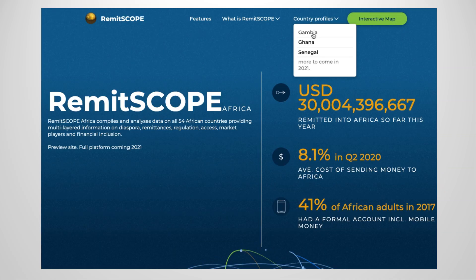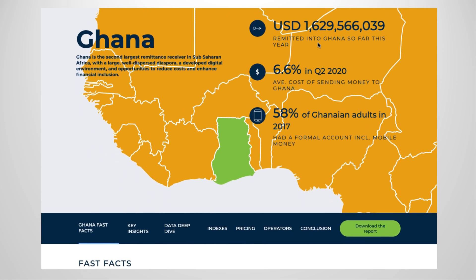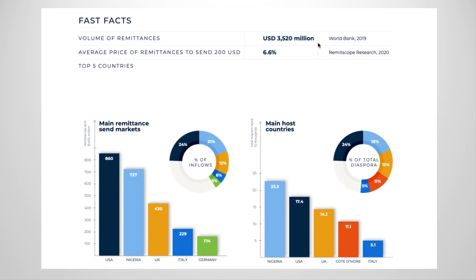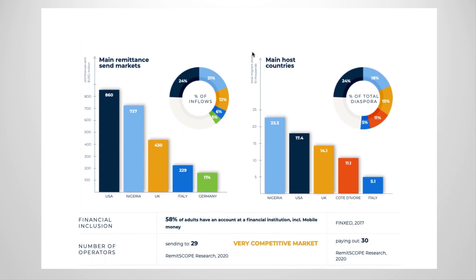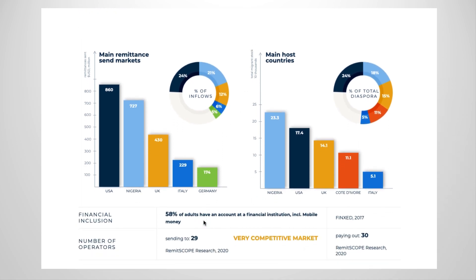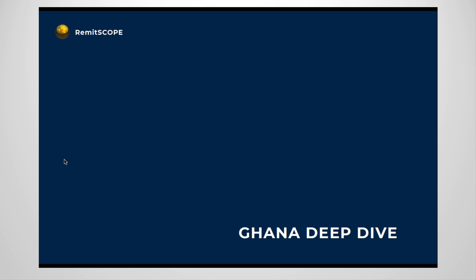Now let's look at the country profile example for Ghana. These reports are brief and intended to be more easily understandable than a country's data deep dive. The country reports include a small number of indicators: mainly annual received remittances in US dollars, the average cost of sending remittances to a country, the percent of the population with a bank account and/or mobile transfer capabilities, the top origin countries of remittances, and the number of transfer operators — both those that accept money from senders and operators based in the receiving country that pay out the transfer to recipients.